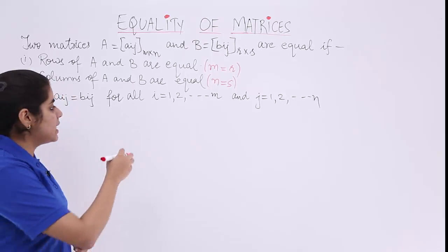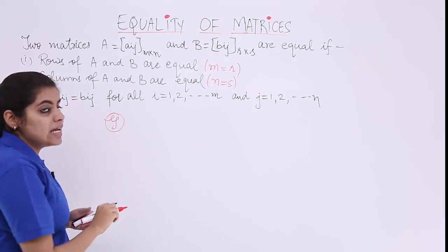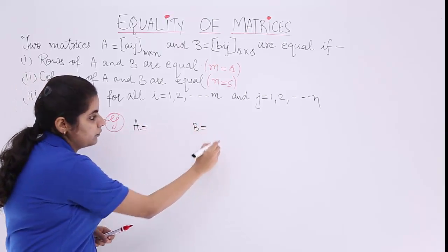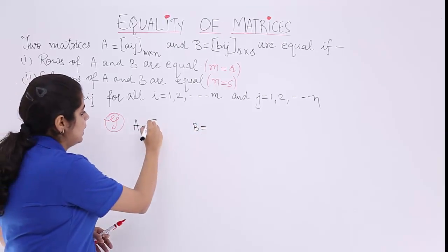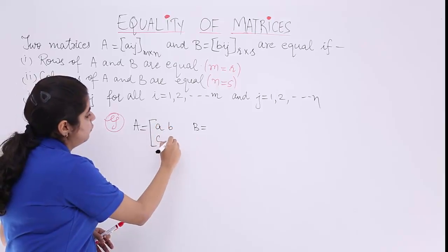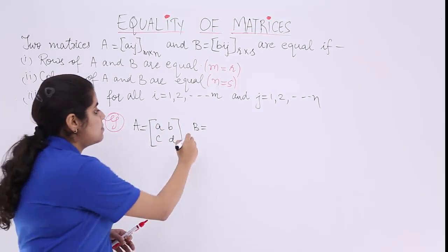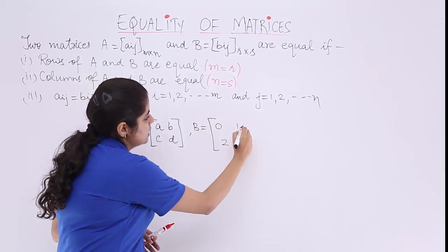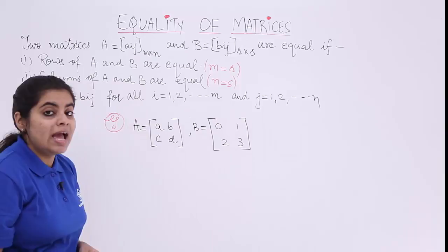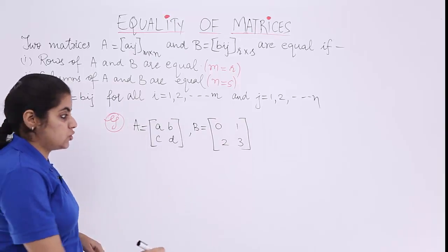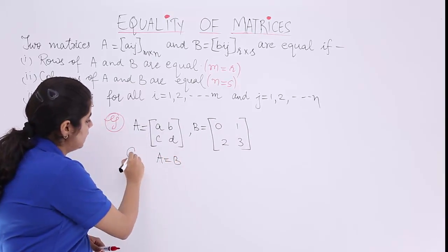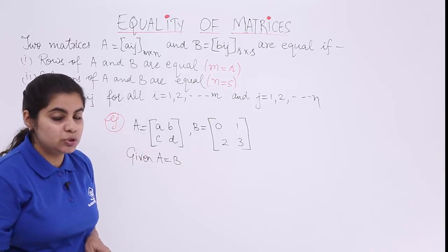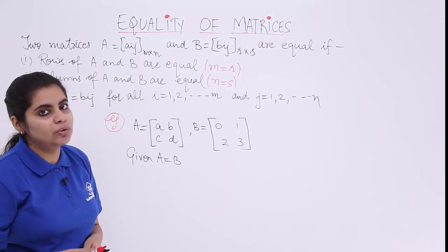Let's see some examples. Example number 1 is about two matrices A and B. Matrix A has four elements A, B, C, D and matrix B has four elements 0, 1, 2, 3. It is given in the question that A is equal to B. Now since matrix A is equal to matrix B, we need to follow the conditions.